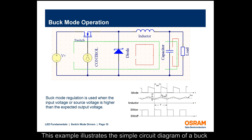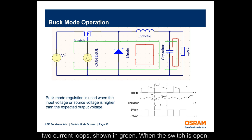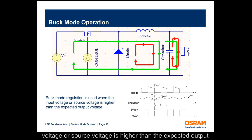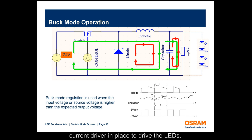This example illustrates the simple circuit diagram of a buck-type switch mode regulator design. The primary function of the driver IC is to generate the control signal which turns the switch on and off. When the switch is closed, there will be two current loops shown in green. When the switch is open, current flows in the direction shown in red. Buck mode regulation is used when the input voltage is higher than the expected output voltage. For instance, if a standard 24-volt supply is used to drive four 1-watt high-power LEDs connected in series, a buck-mode constant current driver is needed.